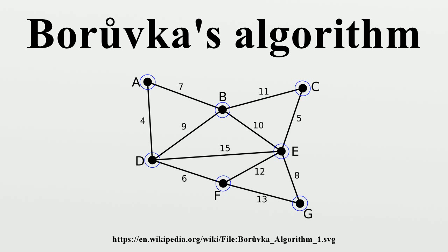Tracking components of T can be done efficiently using a disjoint set data structure. In graphs where edges have identical weights, edges with equal weights can be ordered based on the lexicographic order of their endpoints.